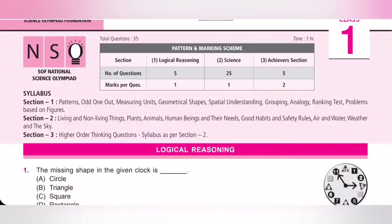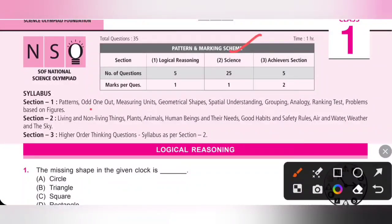Number of questions is 5, and each question carries 1 mark. Second section is Science. In Science section, questions will be from Living and Non-Living Things,